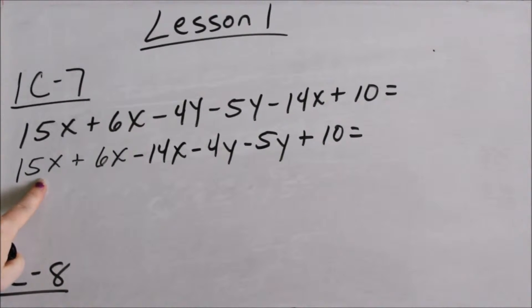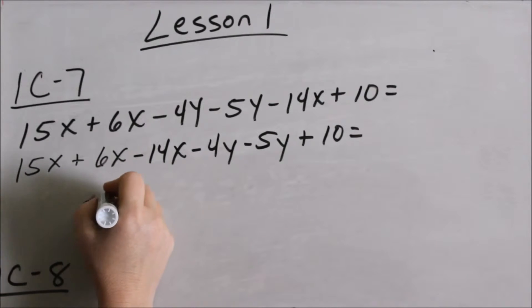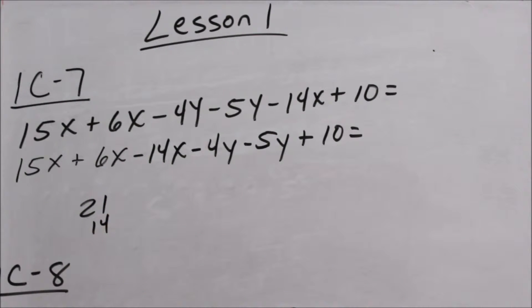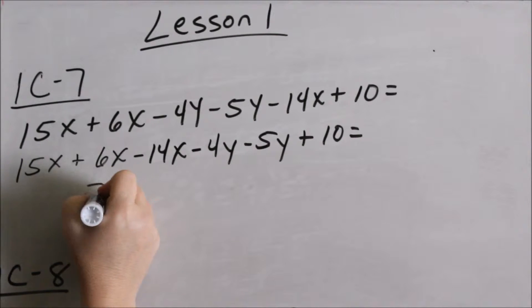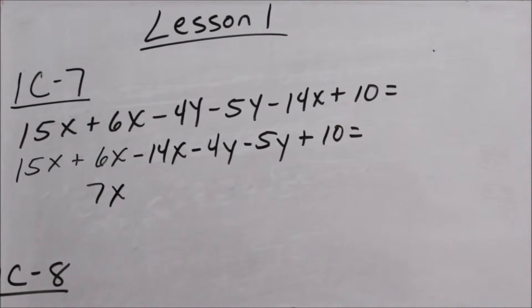Combining my X's: 15X plus 6X. If I have 15 cookies plus 6 cookies, I now have 21 cookies or 21X's. Now 21 minus 14, that would be 7. 7X.